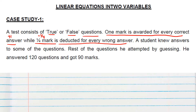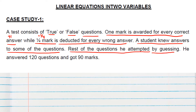A student knew answers to some of the questions, and the rest he attempted by guessing. So there are two types of questions answered by the student — these are our two variables, x and y.